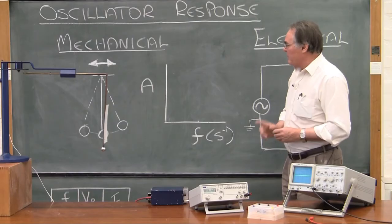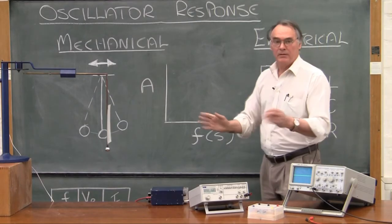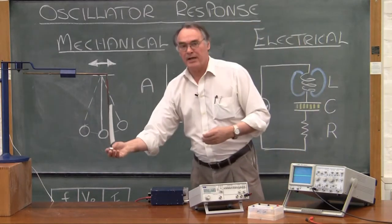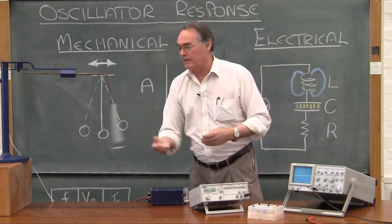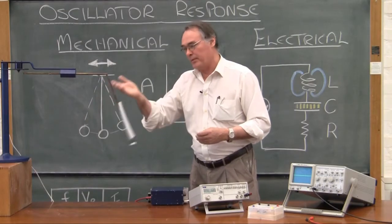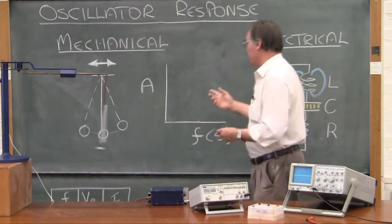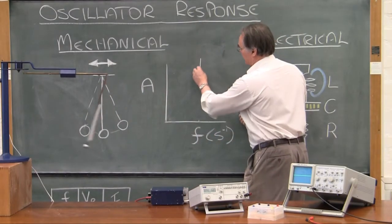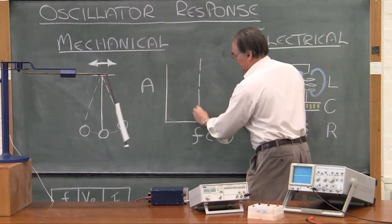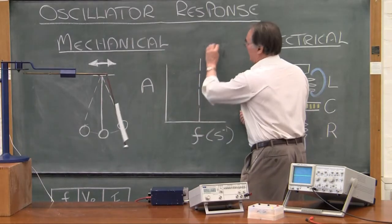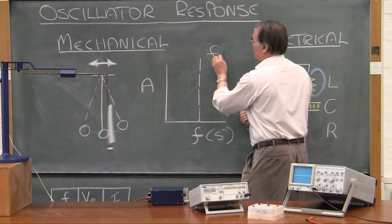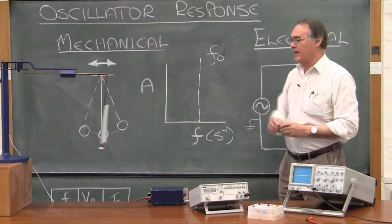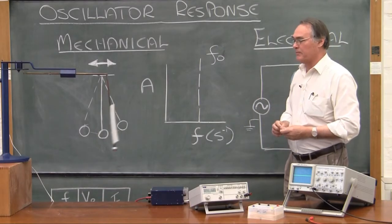Remember that every oscillator has some natural frequency. In the case of this pendulum, it'll be that frequency. Let's show that natural frequency by means of a center line over here, and I'm going to denote that by F0 — that's the natural frequency.